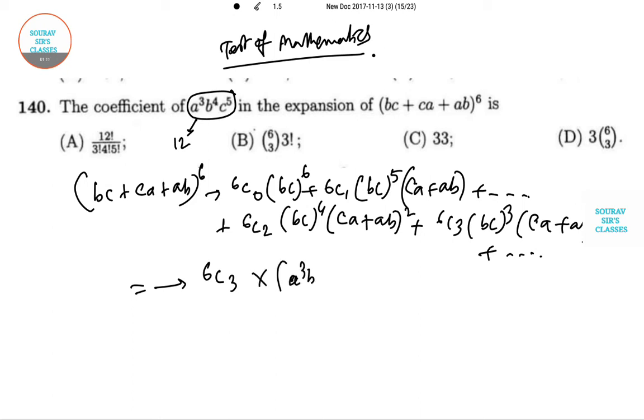And here you can see the term which is 6C3 into a³b³c³(c + b)³. This is the term which is what we need. It is the term which is 6C3 into a, b, c whole cube.